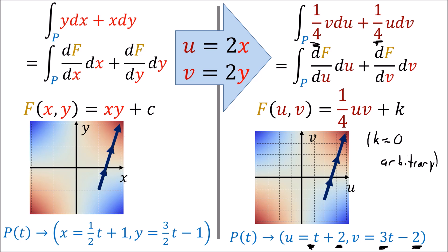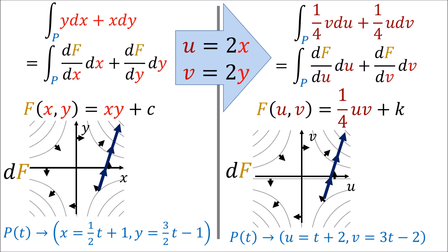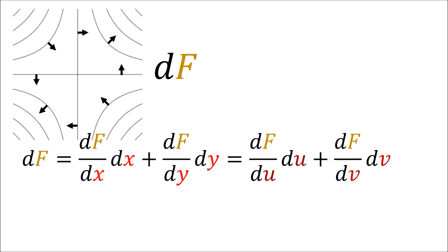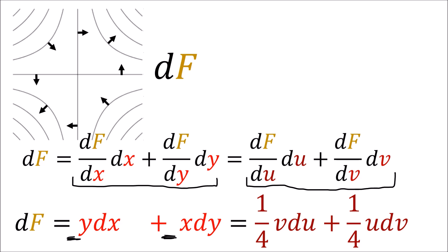Since the scalar field and path look exactly the same in both cases — only the measuring sticks have changed — the covector field df is the same in both cases, and the result of both integrals is 5. So this covector field df is a geometric object that doesn't depend on our choice of coordinate system. We can expand df into x and y, or u and v, and get different-looking coefficients, but these are just two different ways of describing the same covector field df.